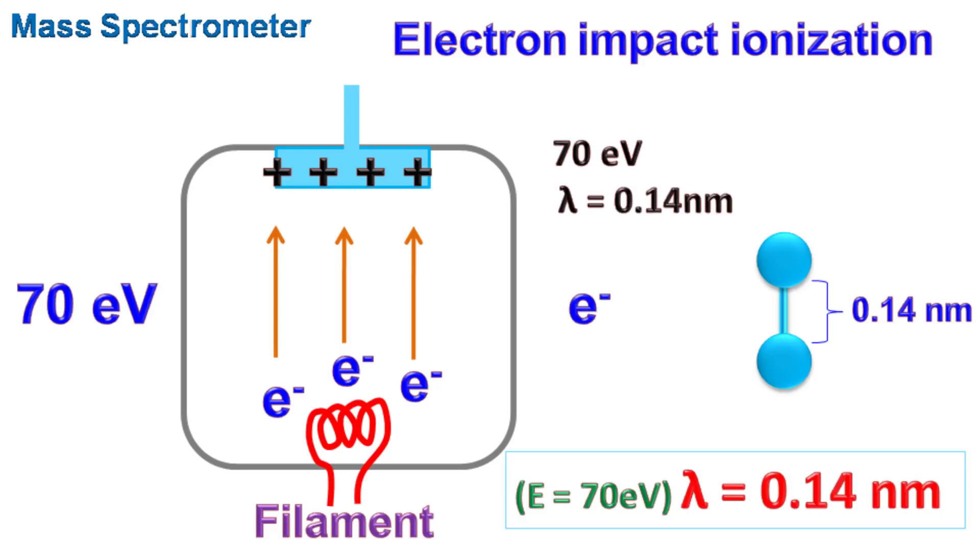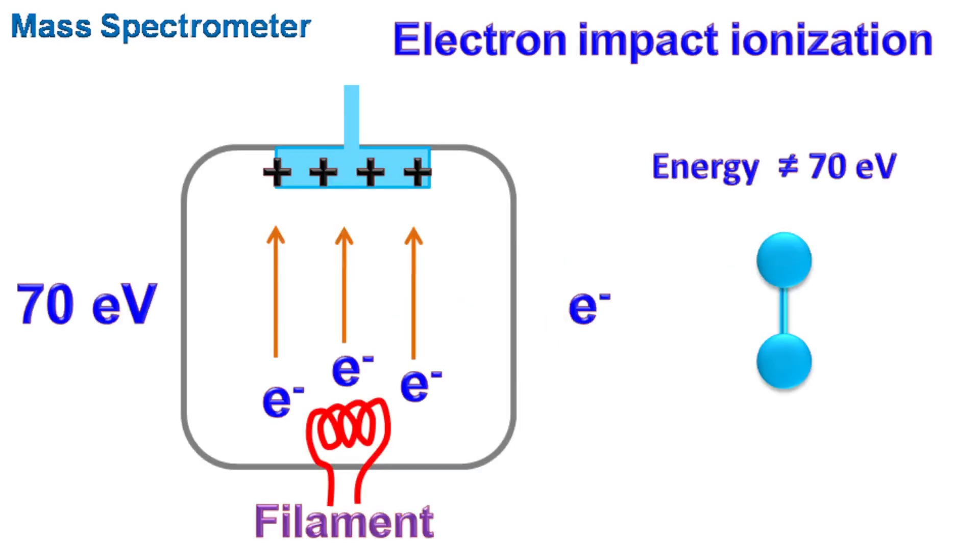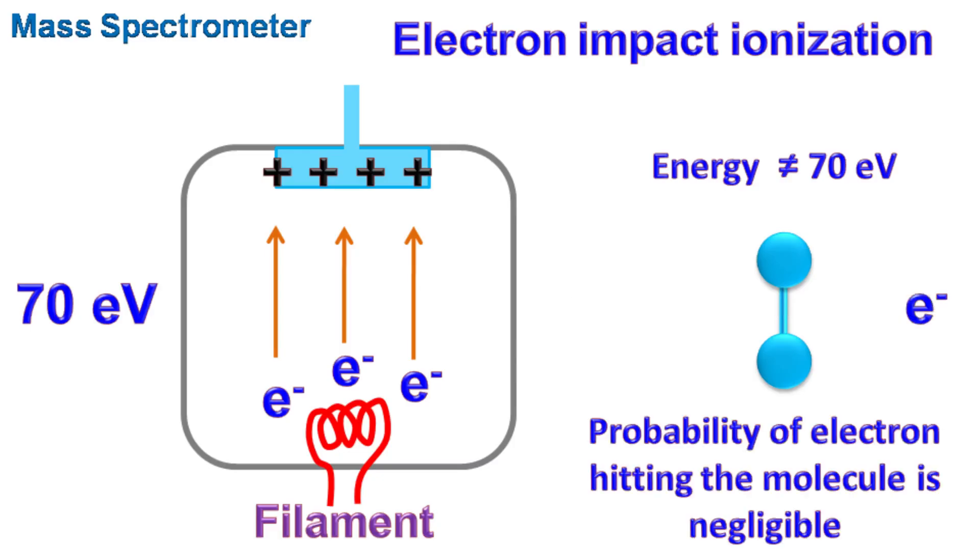Now 0.14 nanometers is equivalent to the dimension of the chemical bond in organic molecules. Hence at this energy, the probability of electrons hitting the molecule and breaking the chemical bonds is maximum. When the chemical bond is broken, the electrons present in the bond are released, giving rise to positively charged ion. If the energy of accelerated electrons is not 70 electron volts, then the wavelength will not match the molecular distance, and electrons will pass through the molecule without breaking the chemical bond.